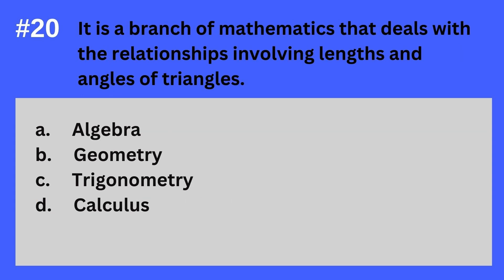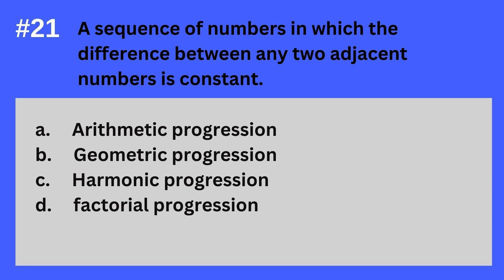Question 20. It is a branch of mathematics that deals with the relationships involving lengths and angles of triangles. A. Algebra. B. Geometry. C. Trigonometry. D. Calculus. The answer? It's C. Trigonometry. It is a branch of mathematics that deals with the relationships involving lengths and angles of triangles — Trigonometry.